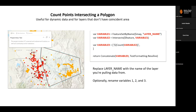It's using this expression over on the right — a super simple expression just using feature set by name, referencing the map, and then you replace the layer name with the layer you're pulling information from. You can rename those variables to something more applicable to your project, and that's essentially it. I'll demo this in just a minute.